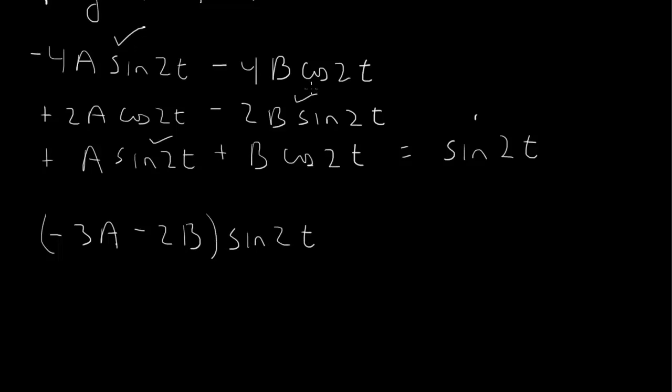And then let's collect the cosine 2t terms. So we have 2a here plus b minus 4b. So we have plus 2a and then b minus 4b. This one and this one is minus 3b times cosine 2t. And that's going to be equal to 1 times sine 2t plus 0 times cosine 2t.